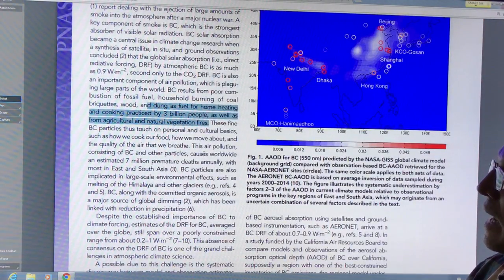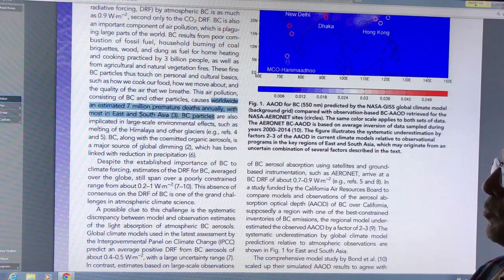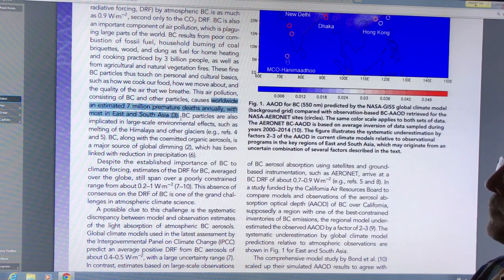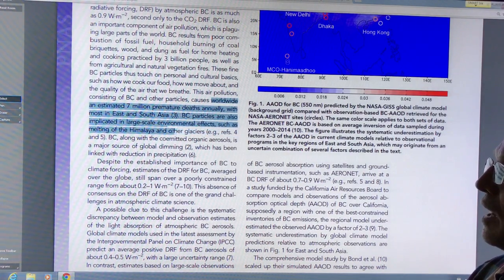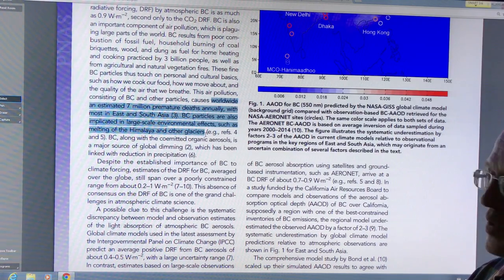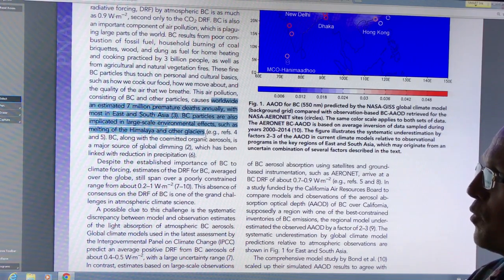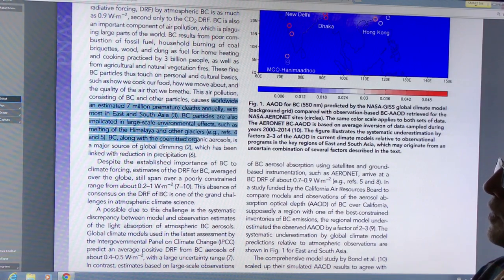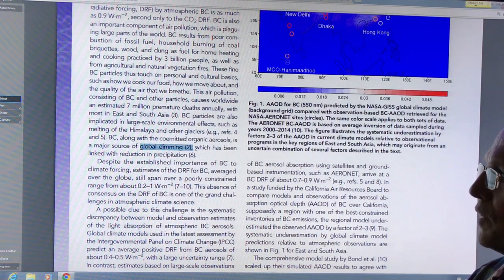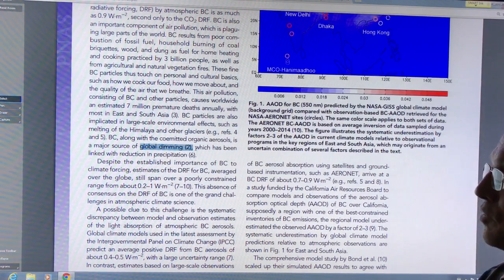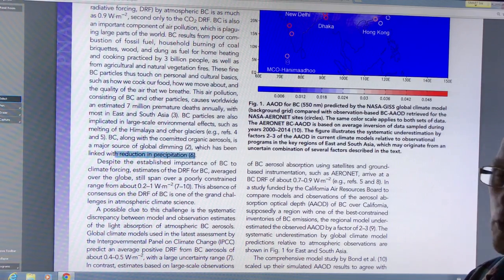There's an estimated seven million premature deaths annually, most in East and South Asia. Black carbon eventually settles on ice in the Himalayas and other glaciers, reaches the Arctic and Antarctic, and lowers the albedo of the ice, making it absorb more solar radiation and heat. It causes global dimming at the surface, which can cause drought as it affects rainfall, reduces evaporation, and creates less water vapor in the atmosphere. It can also affect crop growth with less sunlight.